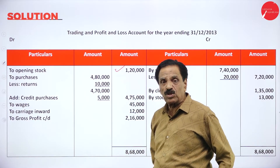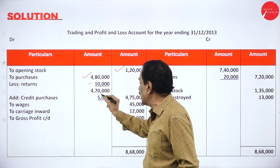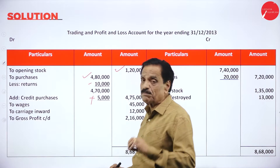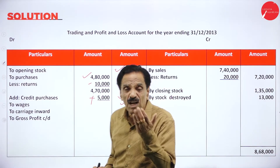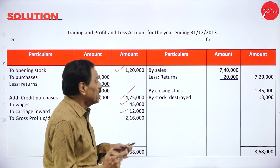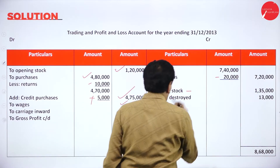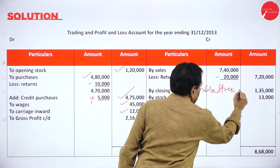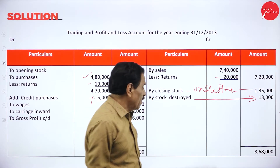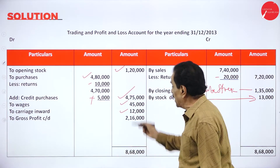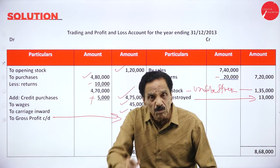Opening stock as per the problem is 1,20,000. Purchases of 4,80,000 less purchase return 10,000 equals 4,70,000. Add credit purchase omitted: 5,000 — real purchases become 4,75,000. Wages paid 45,000. Carriage inward 12,000. Credit side: sales 7,40,000 less returns 20,000 — real sales become 7,20,000. Closing stock 1,35,000. Stock destroyed full value 13,000. Total adds up to 8,68,000. The difference is 2,16,000, which is the gross profit — transferred to profit and loss account.